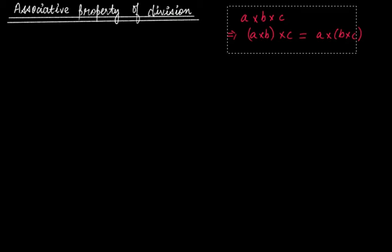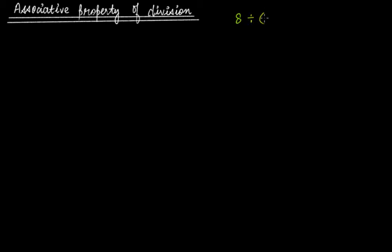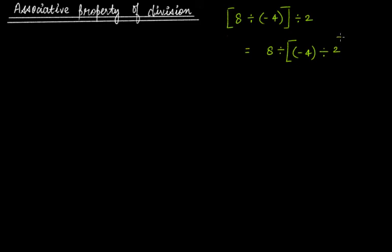Let's check with three integers. Take (8 ÷ -4) ÷ 2 and see if it equals 8 ÷ (-4 ÷ 2). If both sides give the same result, then division of integers would follow the associative property. Let's verify each side.